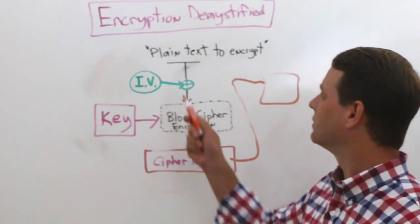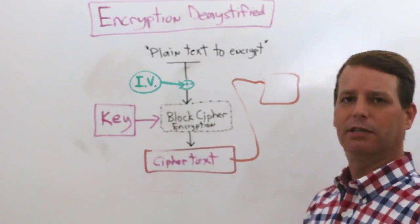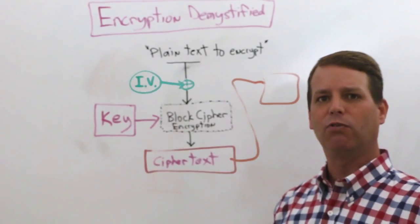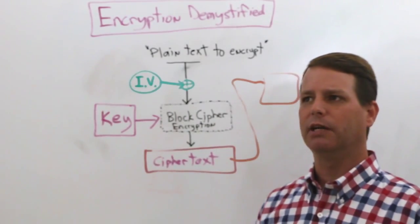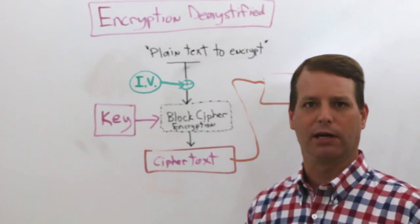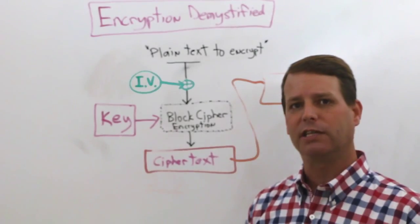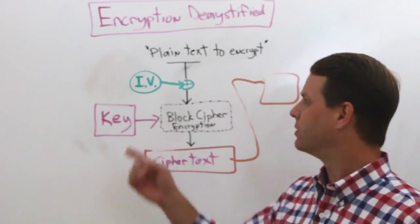So we're going to start with some text, plain text to encrypt. And I'm going to run that through my encryption function. So to start off the process, I'm going to need something to introduce some randomness into the process. So I'm going to use an initialization vector to do that, otherwise known as an IV.